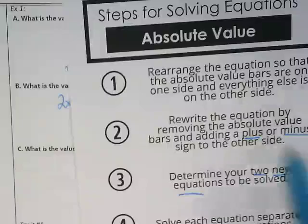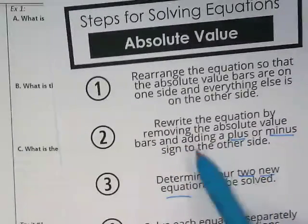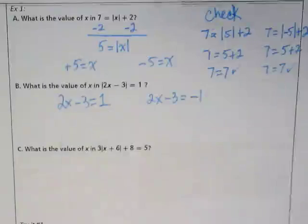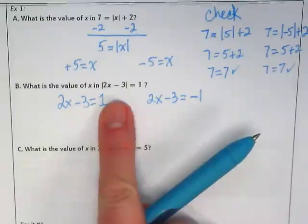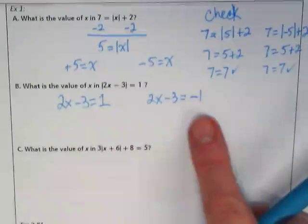I want to go back to this. Rewrite the equation by removing the absolute value bars and adding a plus or minus sign to the other side. So you're saying whatever the absolute value was equal to, one of them is going to be positive, and one of them is going to be negative.